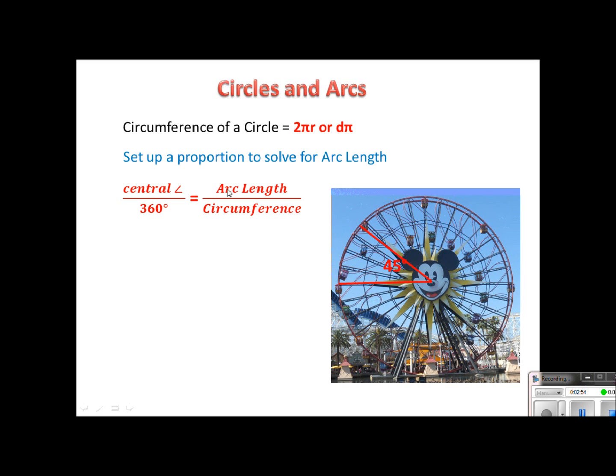Same idea over here. The arc length is a portion of the circle, and then we're going to put this over the circumference, and the circumference is the whole circle. So portion over the whole circle.